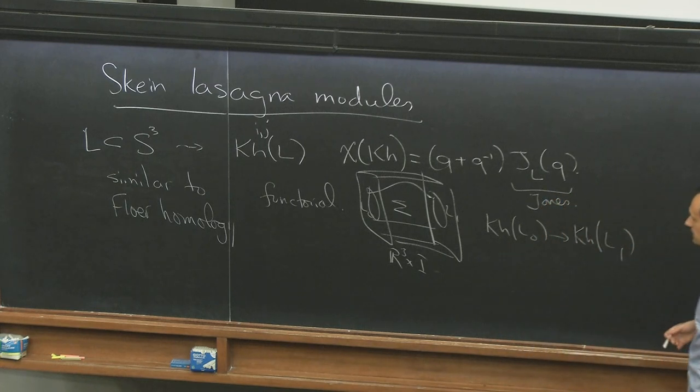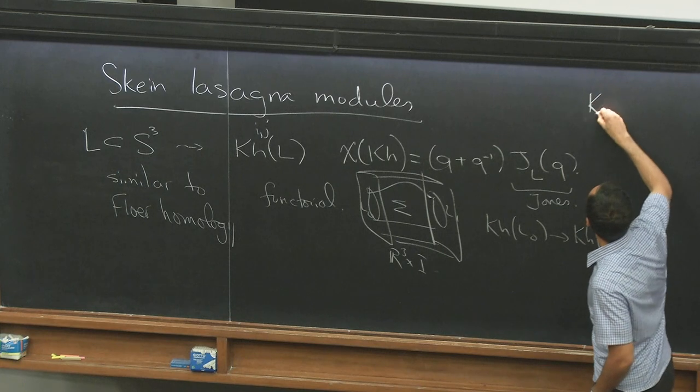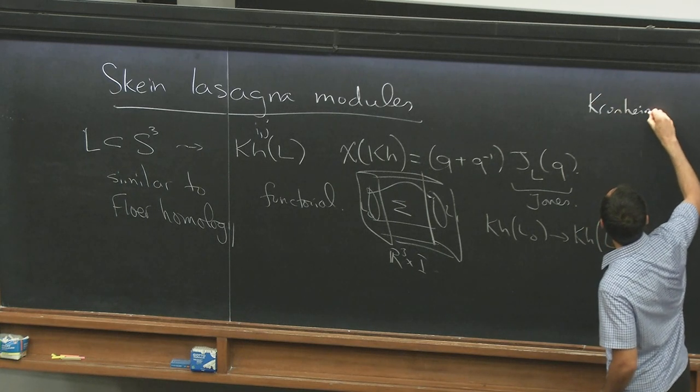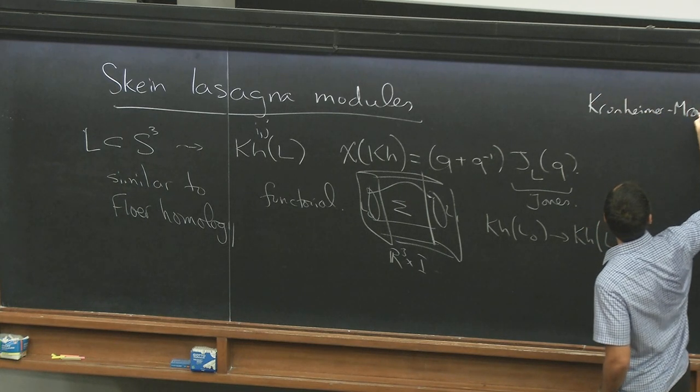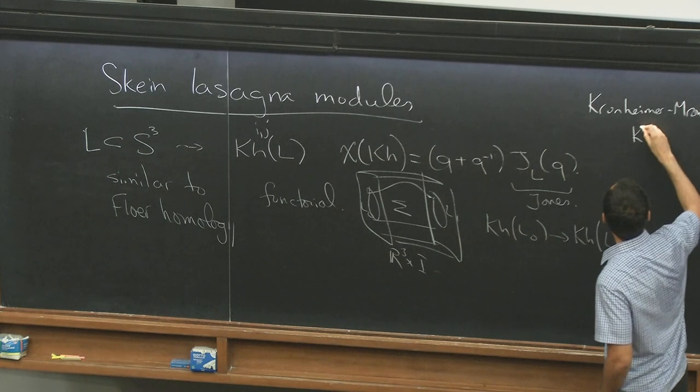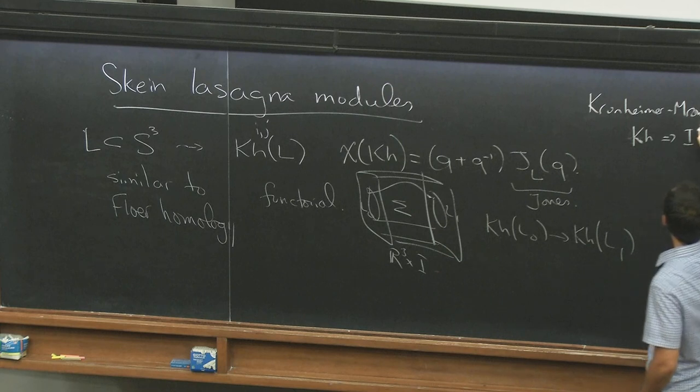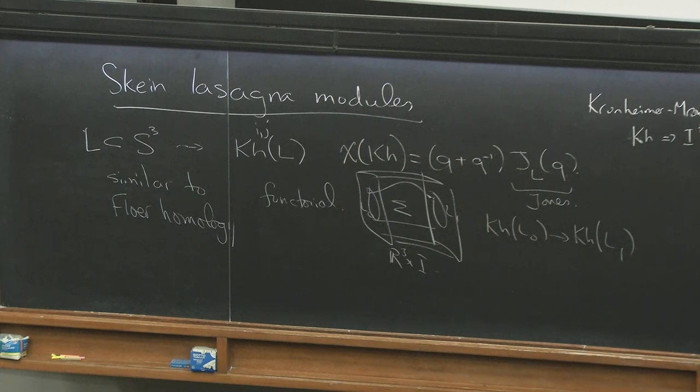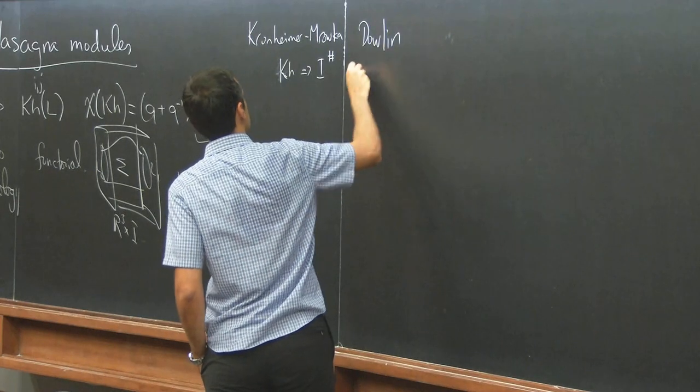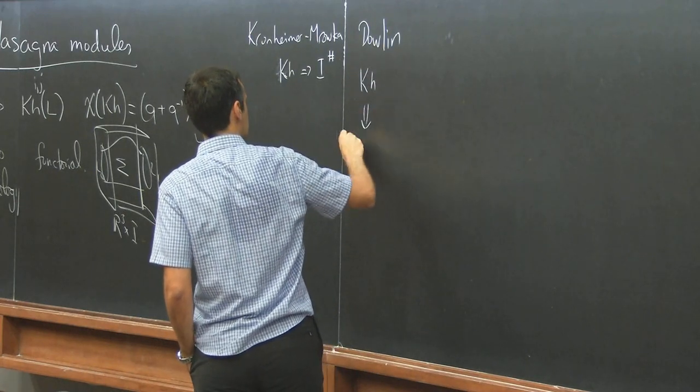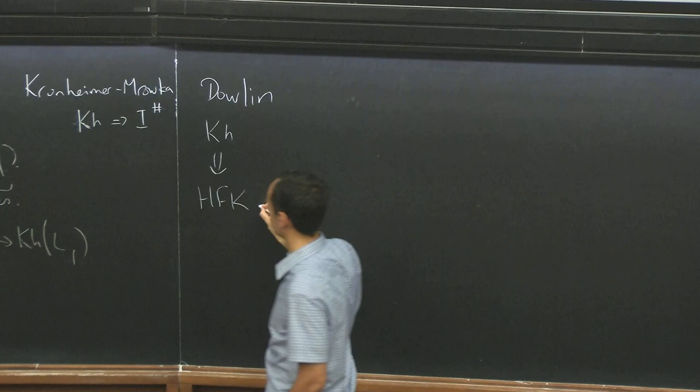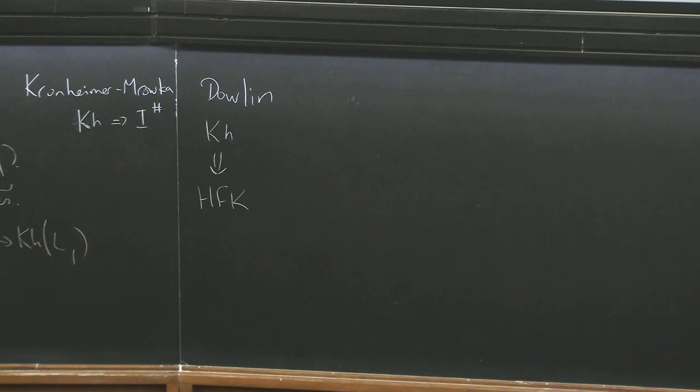And so this is similar to knot Floer homology. And it's also related to Floer homologies by spectral sequences. So Peter and Tom show that there's a spectral sequence from Khovanov homology to the instanton Floer homology of the knot. And Dowlin showed that there's a spectral sequence from Khovanov homology to knot Floer homology.